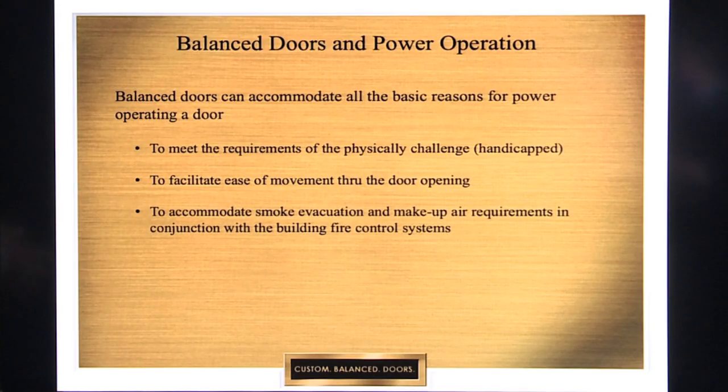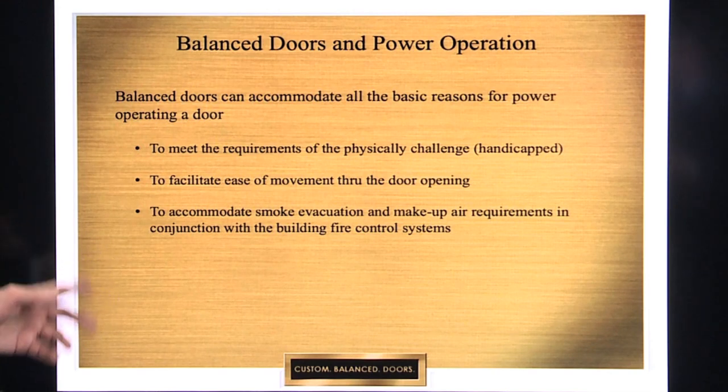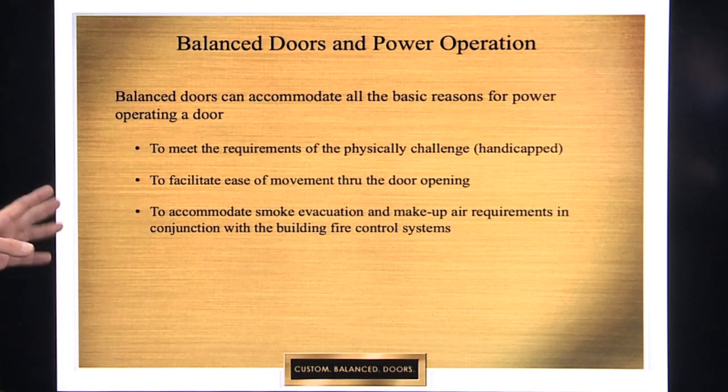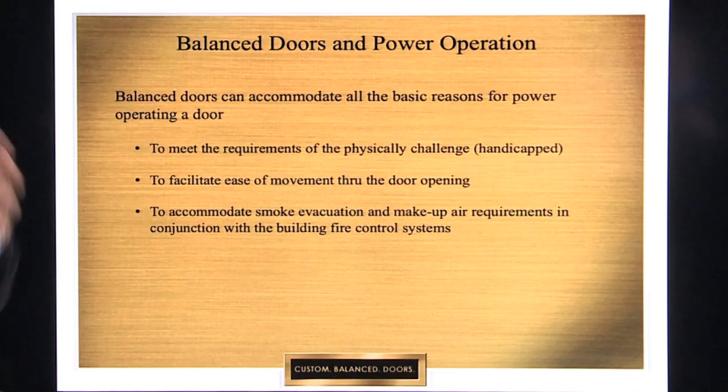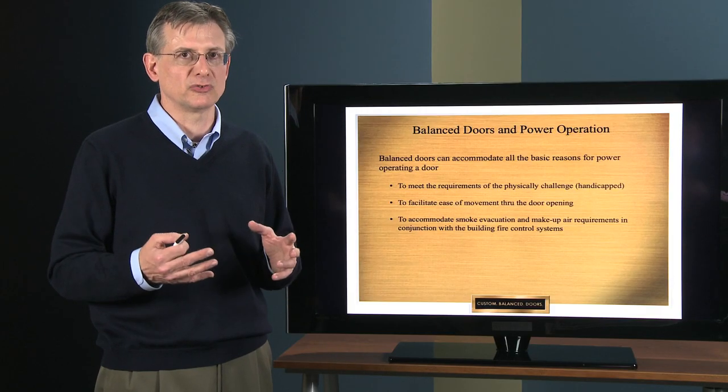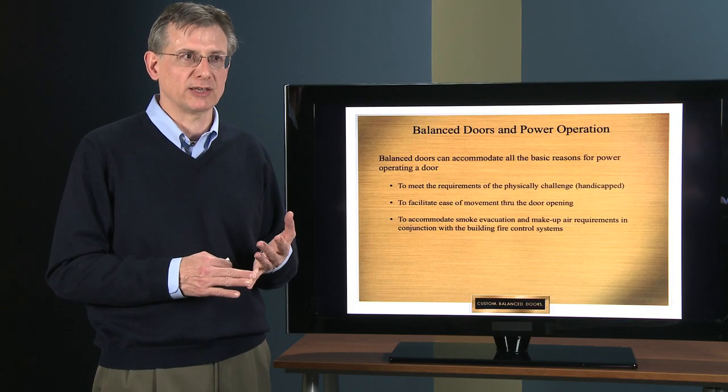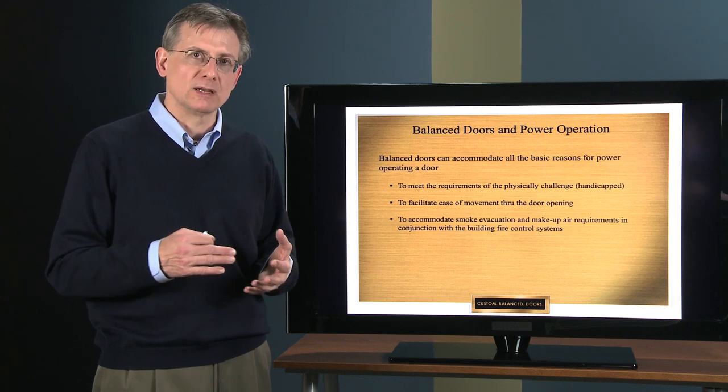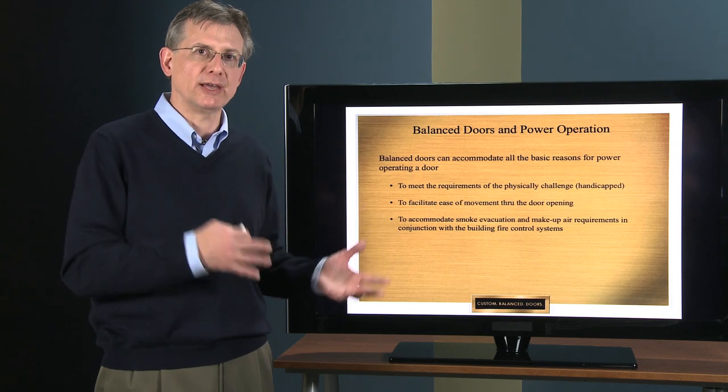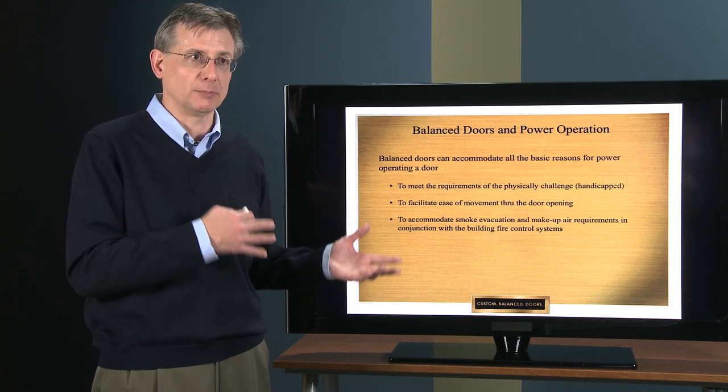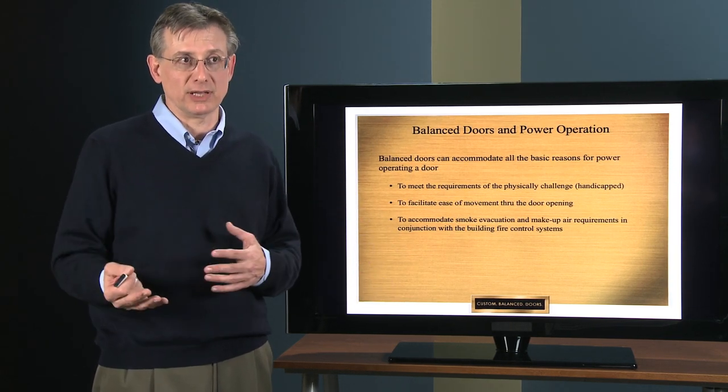The third reason is something that's become a lot more prevalent recently, and that's to accommodate smoke evacuation and make-up air requirements in conjunction with the building fire control systems. With buildings with large atrium spaces, there's been this need now—a lot of codes have been passed for smoke evacuation and make-up air. Instead of having a separate system to deal with that, you can use power operation on a balanced door to accommodate that.